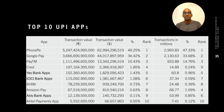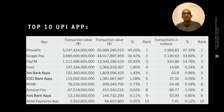In India, PhonePe, Google Pay, and Paytm are the top UPI apps. In terms of transaction share and value, PhonePe leads with 47% of transactions and 49% of value.